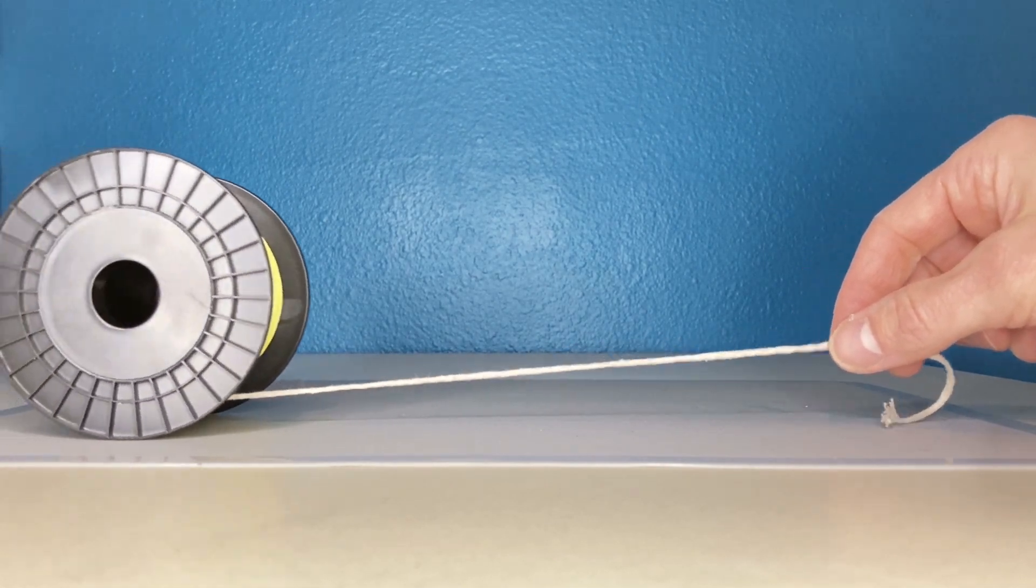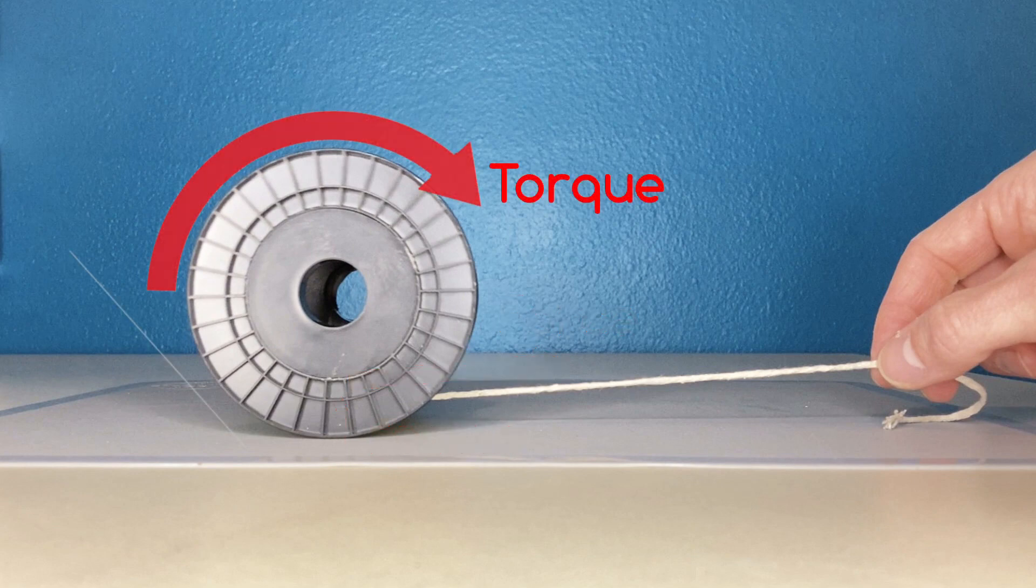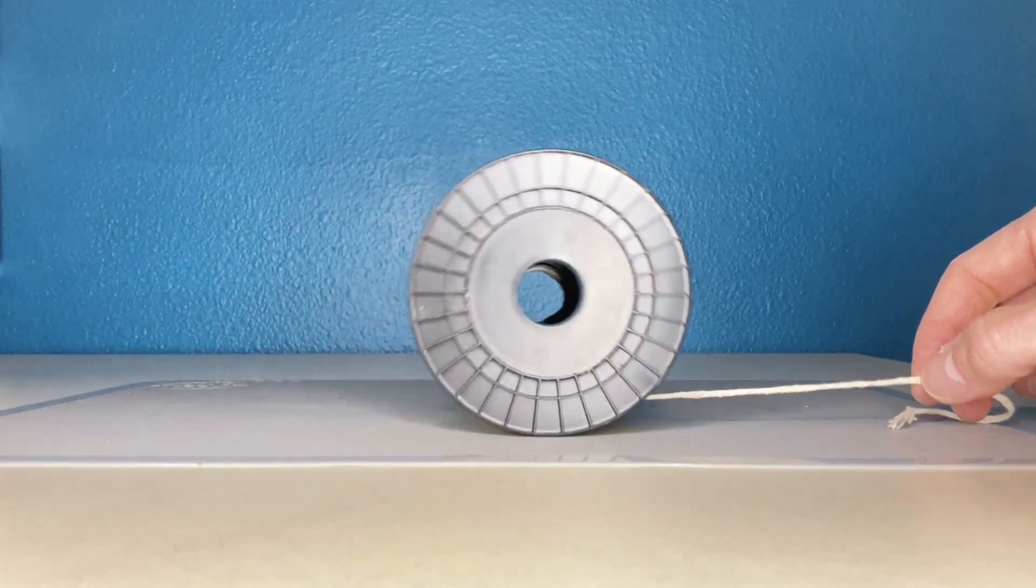When I pull in the opposite direction or to the right, it produces a torque that's clockwise on the spool, causing it to roll clockwise.